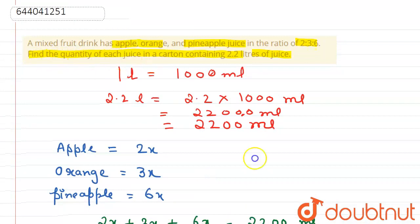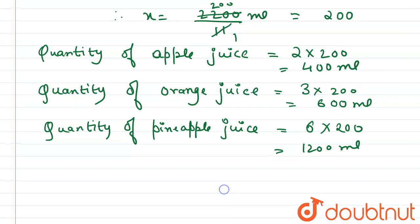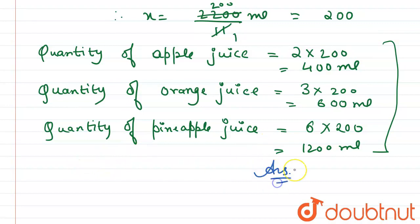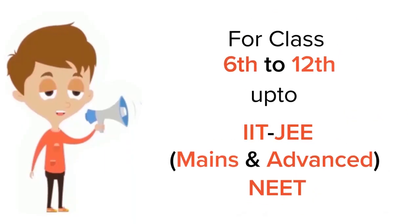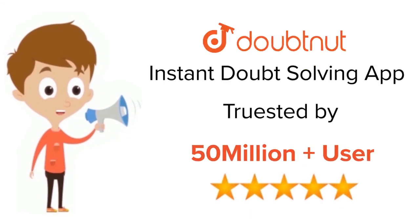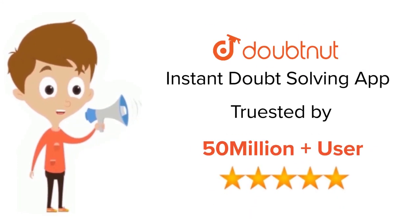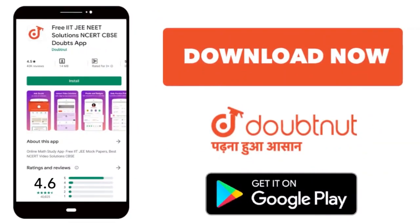So we get the quantity of each juice: apple = 400 mL, orange = 600 mL, pineapple = 1200 mL. This is the answer. For class 6 to 12, IIT JEE, and NEET level — trusted by more than 5 crore students. Download the Doubtnut app today.